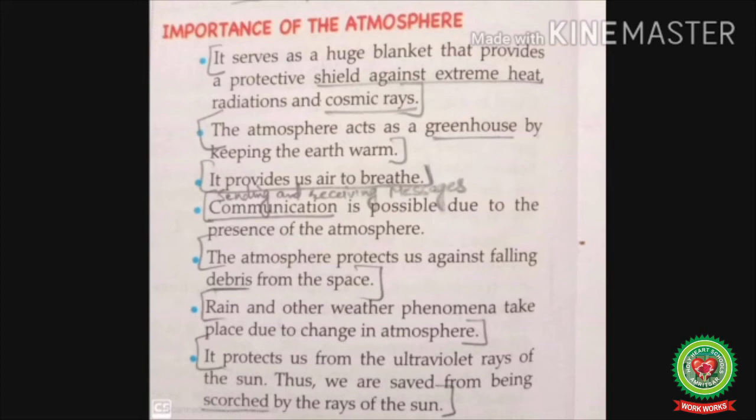In the troposphere, climate changes due to ocean currents. Due to dust particles, rain can be formed. The atmosphere also protects us from the ultraviolet rays of the sun, saving us from being scorched. The ozone layer present in the stratosphere protects us from the harmful ultraviolet rays coming from the sun.